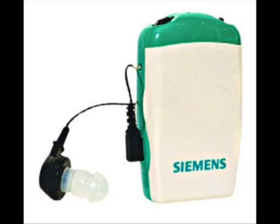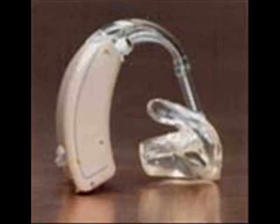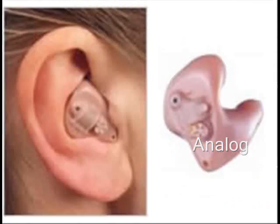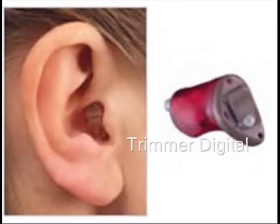Analog hearing aids are the body-level hearing aids and few behind-the-ear hearing aids. In-the-ear, in-the-canal, and completely-in-the-canal hearing aids with trimmer controls are also available.